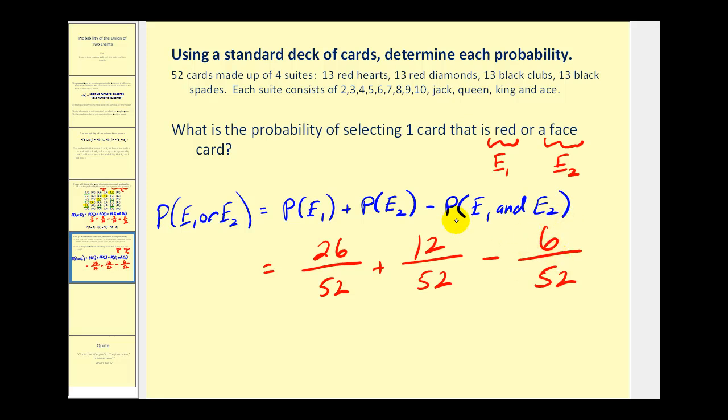Again, the reason we're doing this is we counted the red face cards here and here. So we counted them twice. So we must have subtracted them out once to only count them once. So this probability would be 26 plus 12, that's 38 minus 6, that would be 32 over 52. And these both have a common factor of 4. So this is equal to 8 thirteenths.